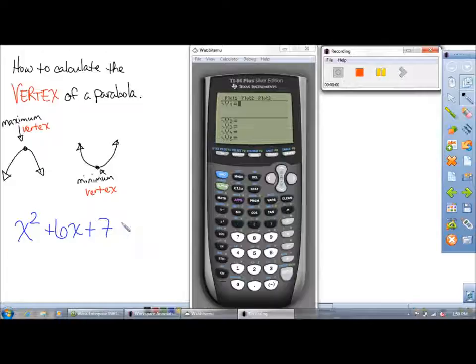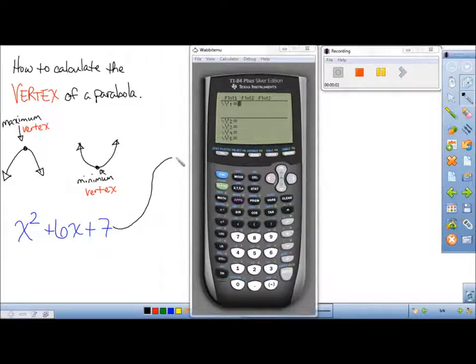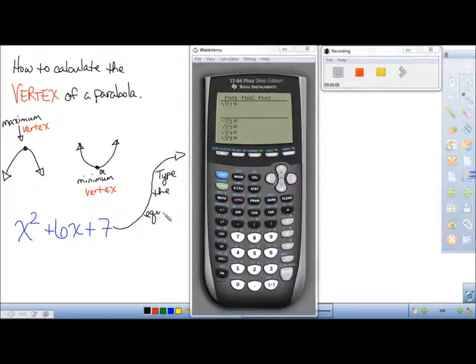Okay, today I'm going to show you how to calculate the vertex of a parabola using the TI-84. The first thing you want to do is type in our equation into the y equals, and we're going to use x squared plus 6x plus 7 as our example today.